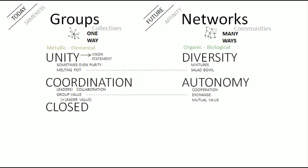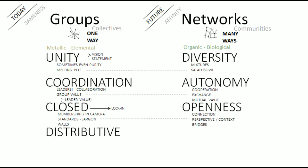Groups are closed — not in the sense that nobody can get into them, but in the sense that there's a clear line between being inside a group and being outside a group. Groups have membership. Groups meet in private or in camera. They have their own jargon, their own in-jokes, their own standards for membership. Groups are characterized by walls — even product lock-in, as in ownership of Apple products, is a kind of closed group formation. By contrast, networks are open — based on connection, perspective, context, and bridges.